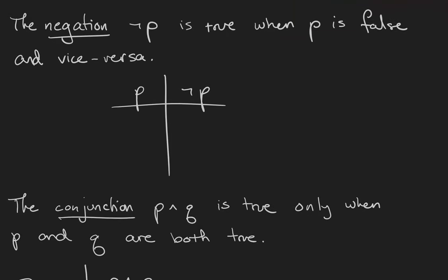Our first connective is the negation. It's symbolized with this little hook. The negation, not P, is true when P is false, and vice versa.